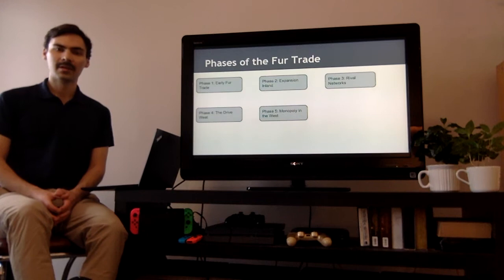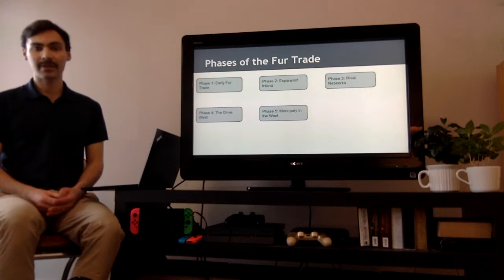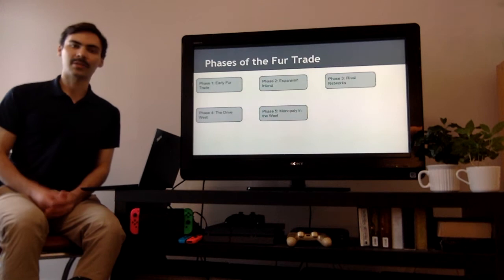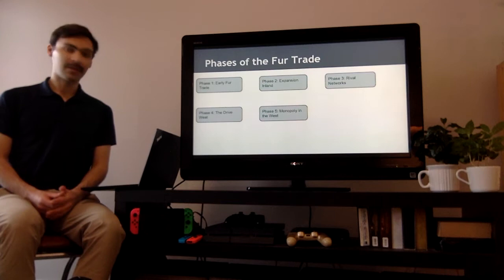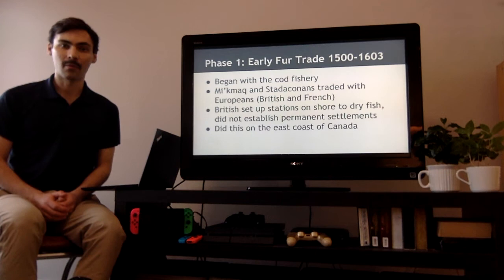We break it down into five different parts, and today in this video we're going to talk about the first two parts. The first one is the early fur trade, the very beginning. The second one is the expansion inland, moving deeper into Canada. The rival networks is number three. Number four is the drive west, and phase five is the monopoly in the west.